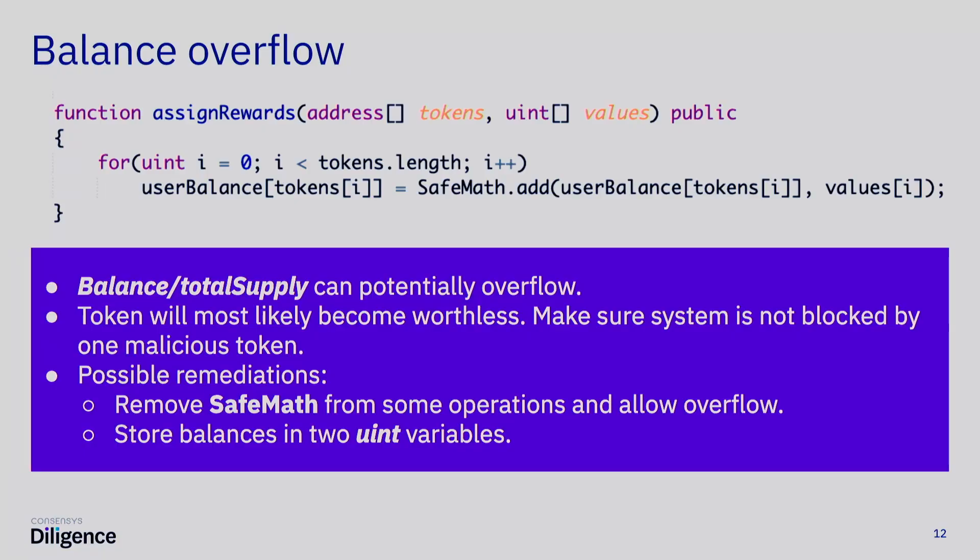One more interesting issue is balance overflow. You would usually expect that total supply is not overflowing. If balance is more than uint256, that usually means the token is either malicious or broken or both, and the token price would most likely be worthless. But if you're working with lots of different tokens — for example, you're signing rewards and using a for loop to store balances so people can withdraw them — and if one of the tokens is broken, the SafeMath add will just revert because of the overflow. Because of that, you might just freeze your pipeline and all the tokens that should be assigned are locked forever and might be lost.